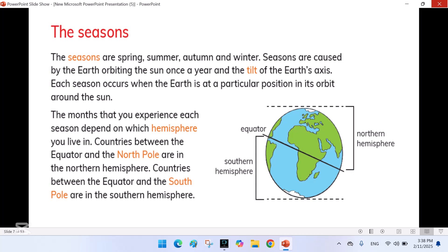The seasons. The seasons are spring, summer, autumn and winter. Seasons are caused by the earth orbiting the sun once a year and the tilt of the earth's axis. Each season occurs when the earth is at a particular position in its orbit around the sun.